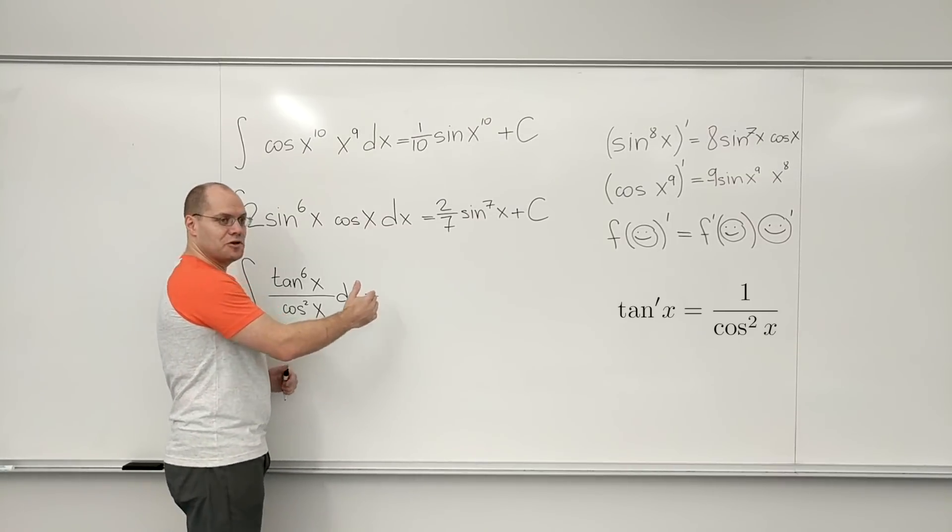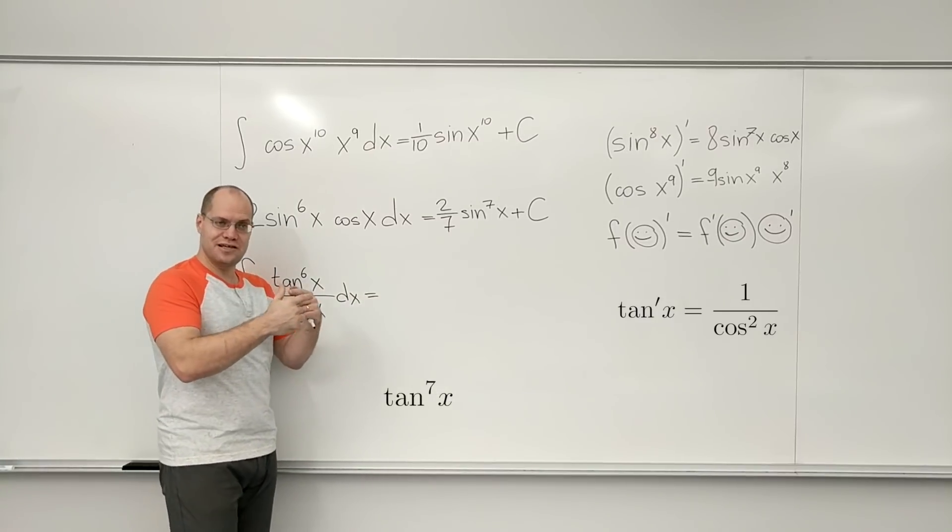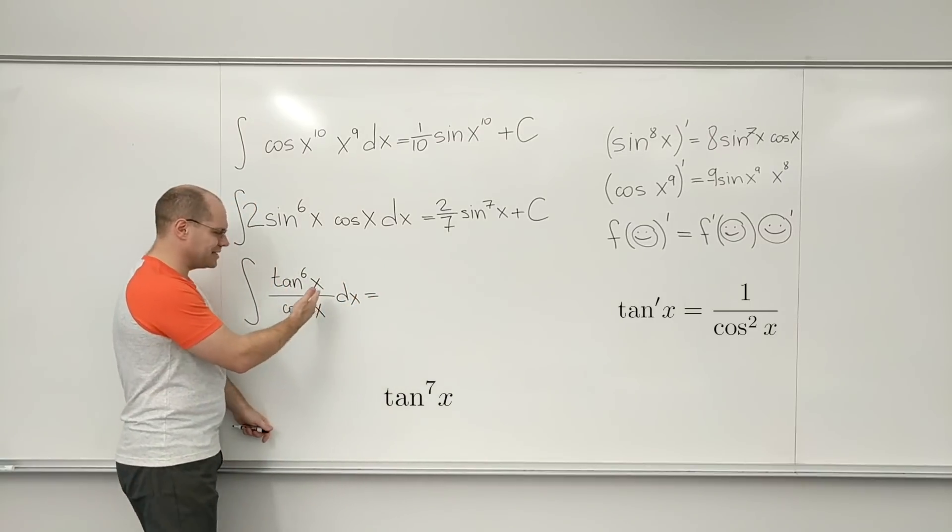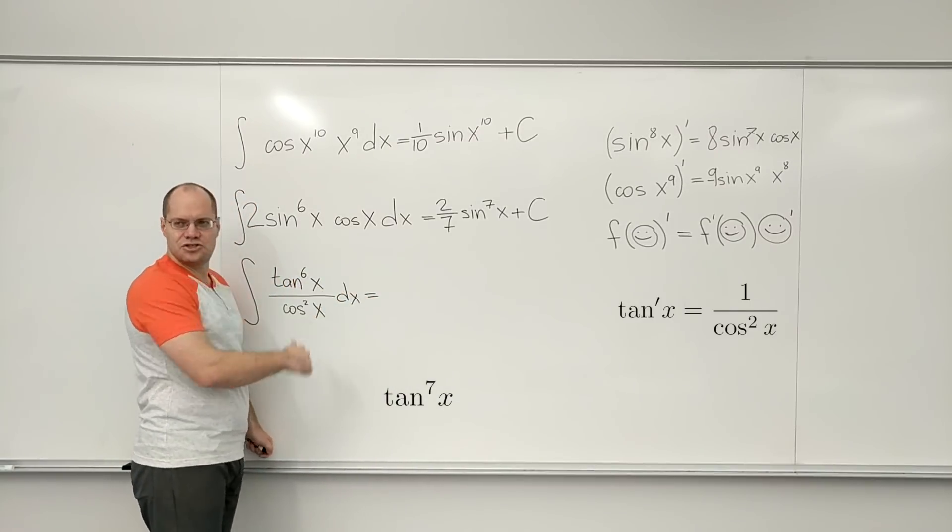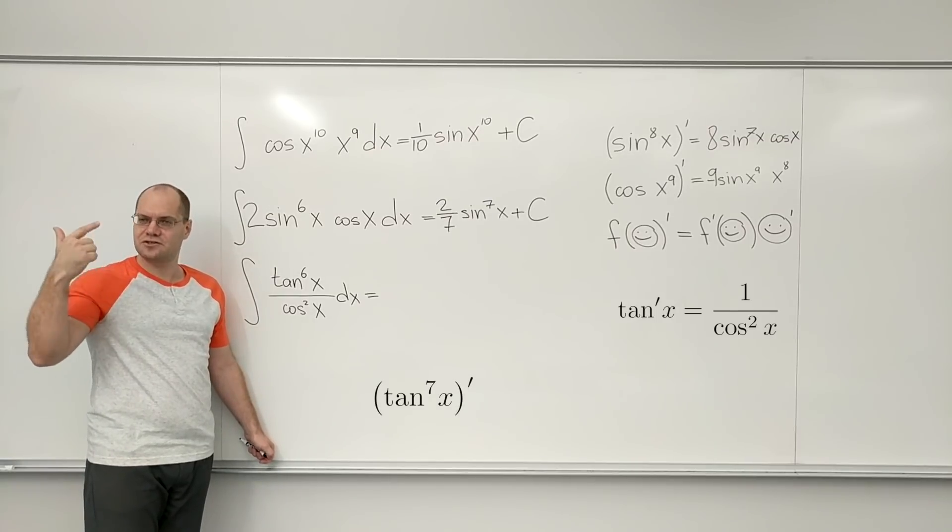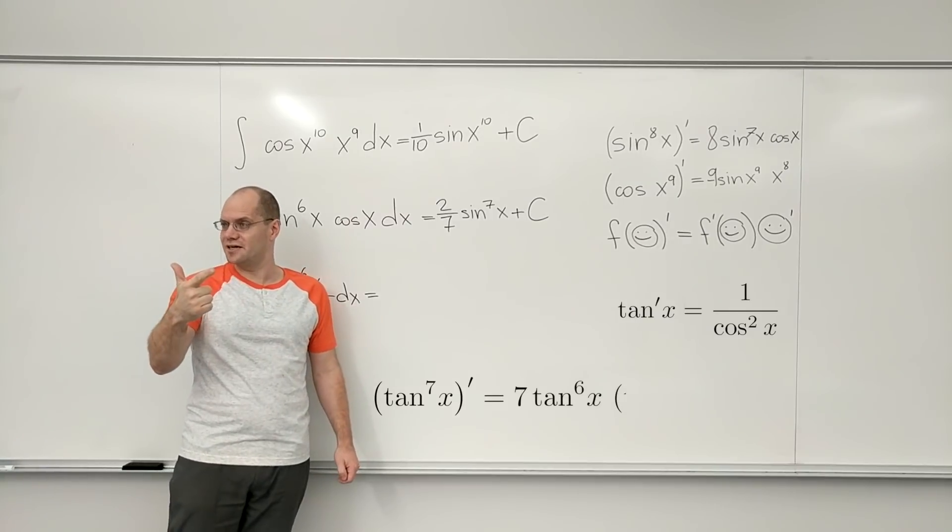then the antiderivative will be that something to the seventh power. And now I begin to think in reverse, which means using the forward chain rule. So I'm suspecting that this will be tangent to the seventh power. And I start taking the derivative of tangent to the seventh power in my head, and it becomes seven times tangent to the sixth.